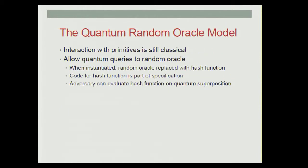For this paper, we'll be looking at the quantum random oracle model. In this model, interaction with the primitives themselves are still classical, but the random oracle is allowed to be queried on a quantum superposition of inputs.